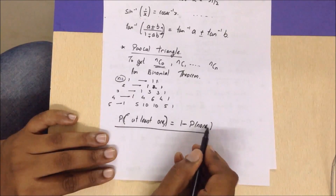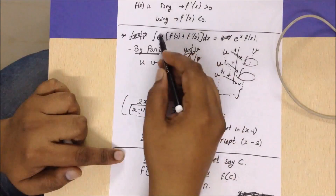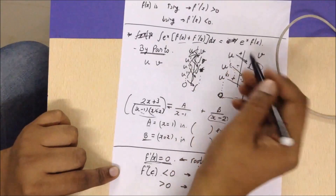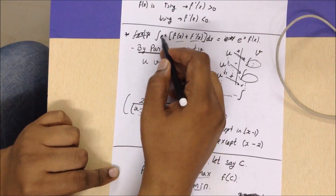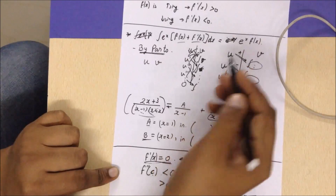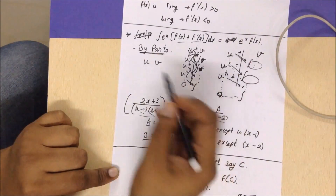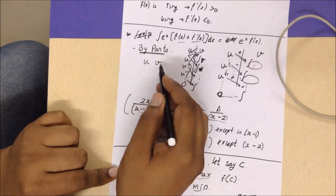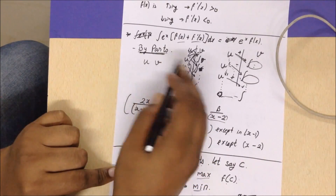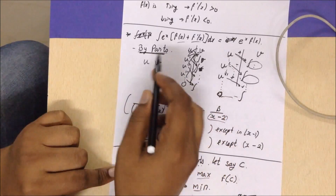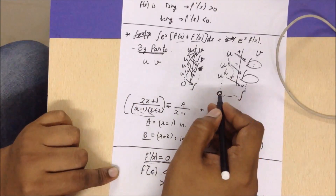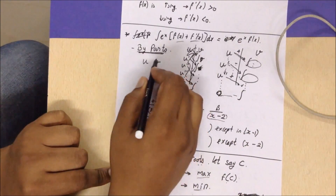In integration: the integral of e^x [f(x) + f'(x)] equals e^x·f(x). So whenever you have an e^x term multiplied by some function, look for a function and its derivative to apply this formula. For integration by parts with two functions u and v, identify which function to differentiate and which to integrate. The function whose repeated derivatives reach zero should be u on the left, and v on the right.